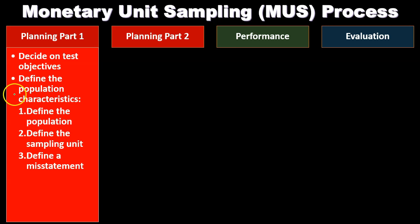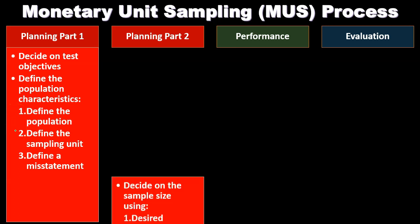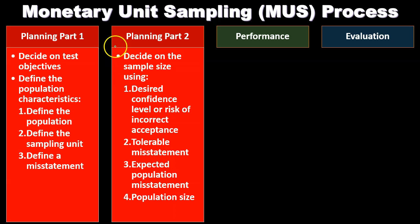Next is defining the population characteristics, including defining the population, the sampling unit, and a misstatement. Then we decide on the sample size using: the desired confidence level or risk of incorrect acceptance, tolerable misstatement, expected population misstatement, and population size.